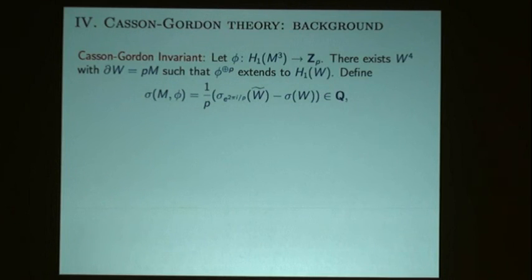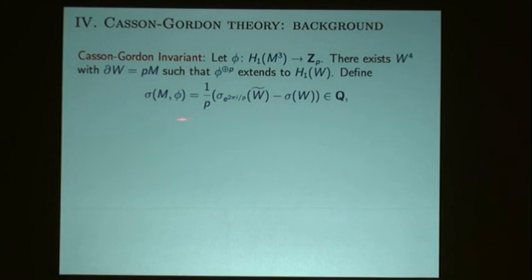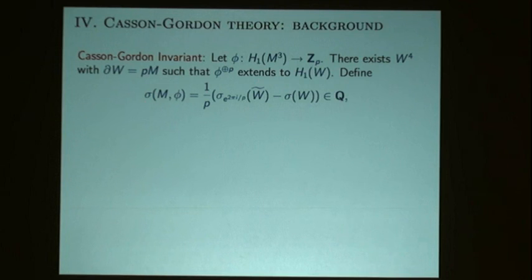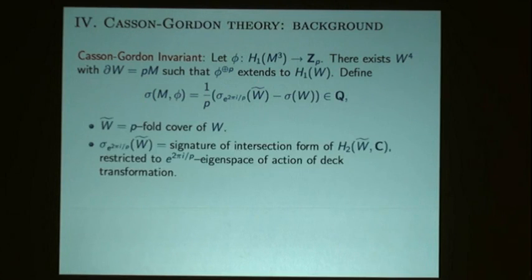Casson-Gordon invariants provide results that are kind of perpendicular to the ones just mentioned. Let me review Casson-Gordon invariants to give a sense of why they tell something about what you can or can't bound. The definition: you have a three-manifold and a map to ZP. There always exists a four-manifold such that the character to ZP extends over H1 of W — though you have to take P copies of your three-manifold. The most elementary Casson-Gordon invariant is given by a formula involving the signature of W and the eigenspace signature of its P-fold cover.